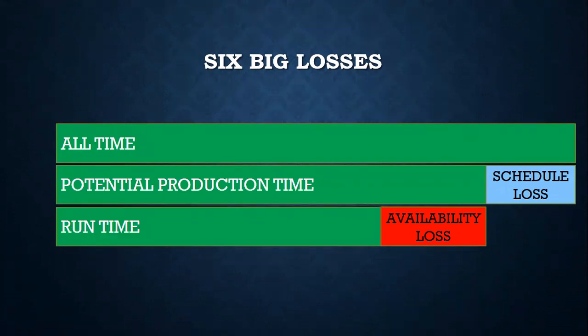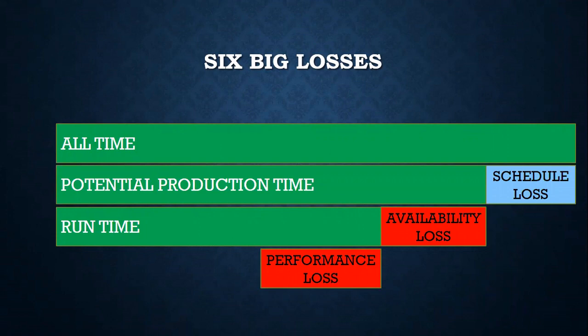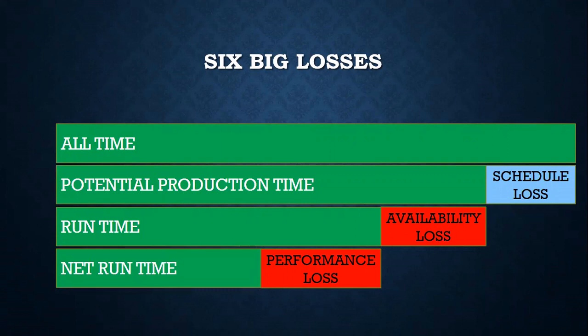In this runtime when production is performed, the next loss comes as performance loss — loss due to reasons when production rate is not able to meet the desired design rate. The left-out time is called net runtime, the time which corresponds to production of parts.